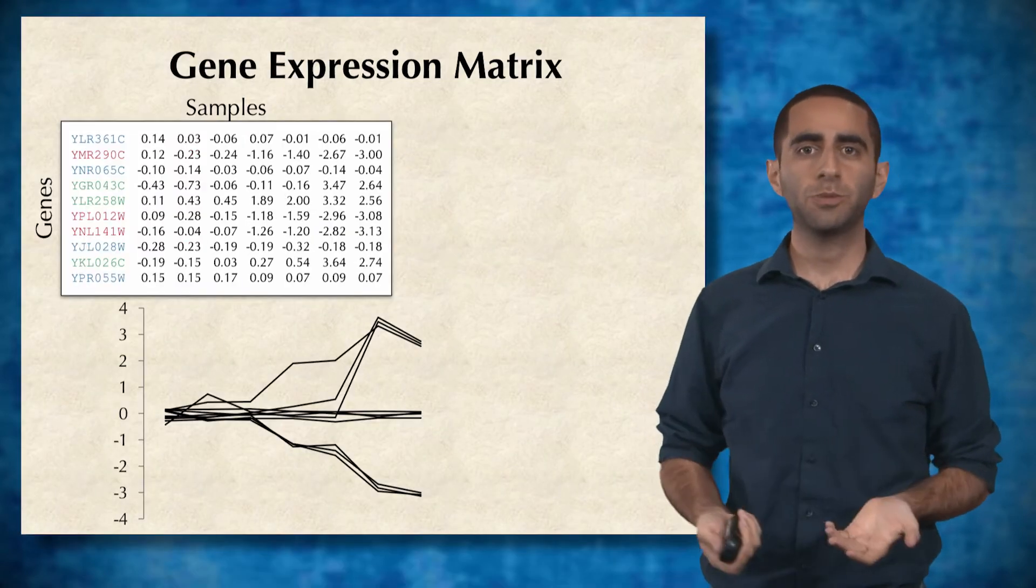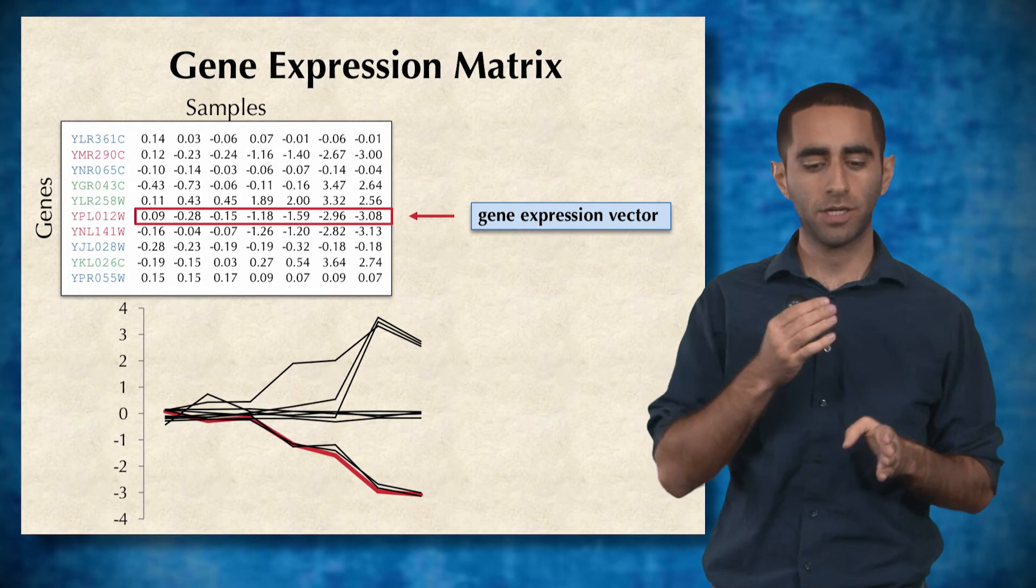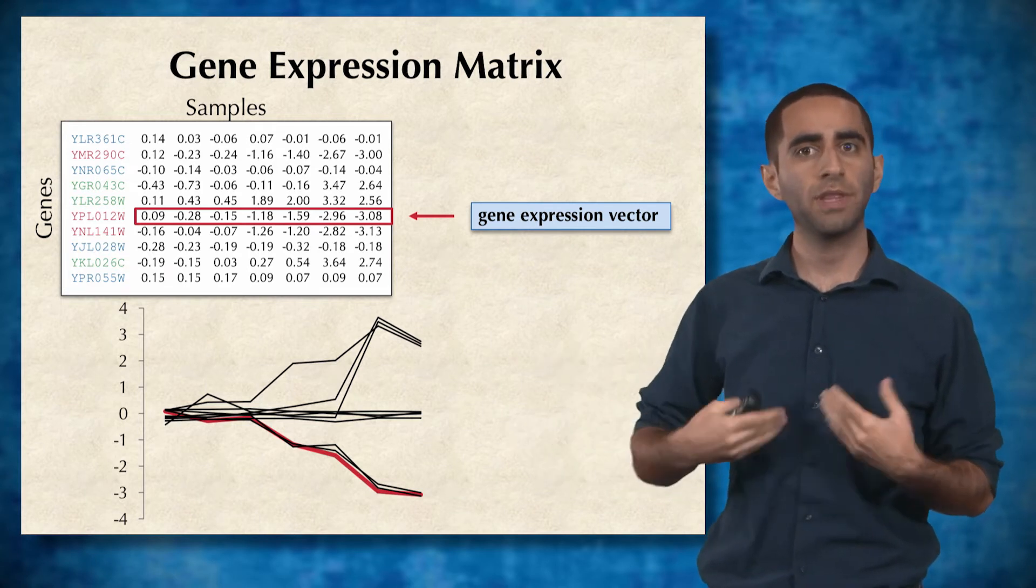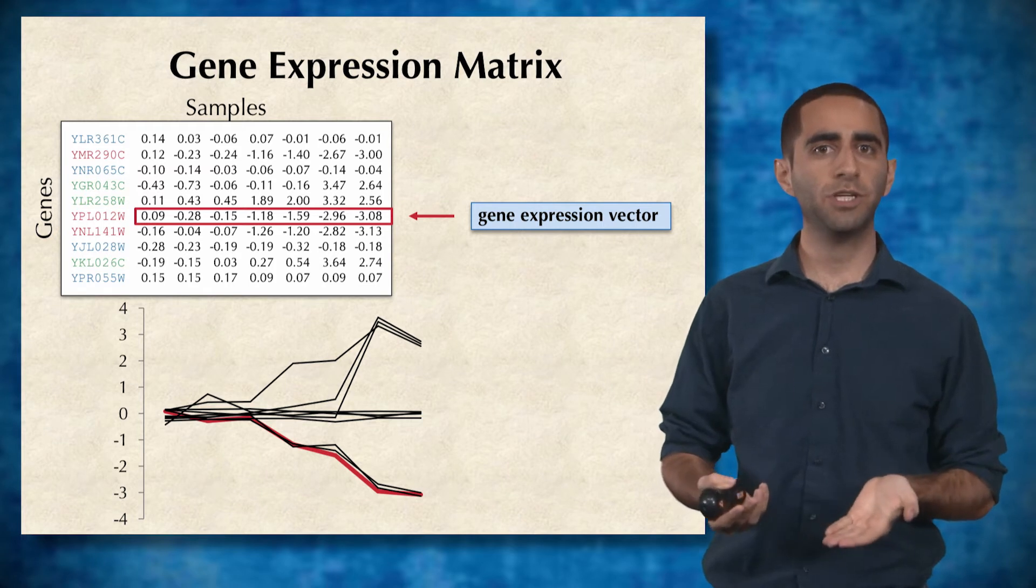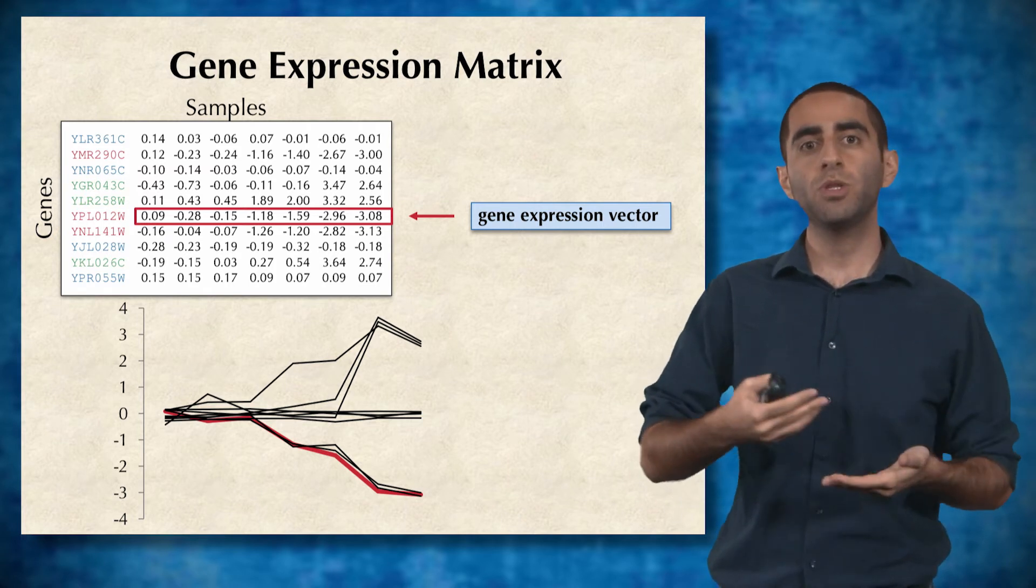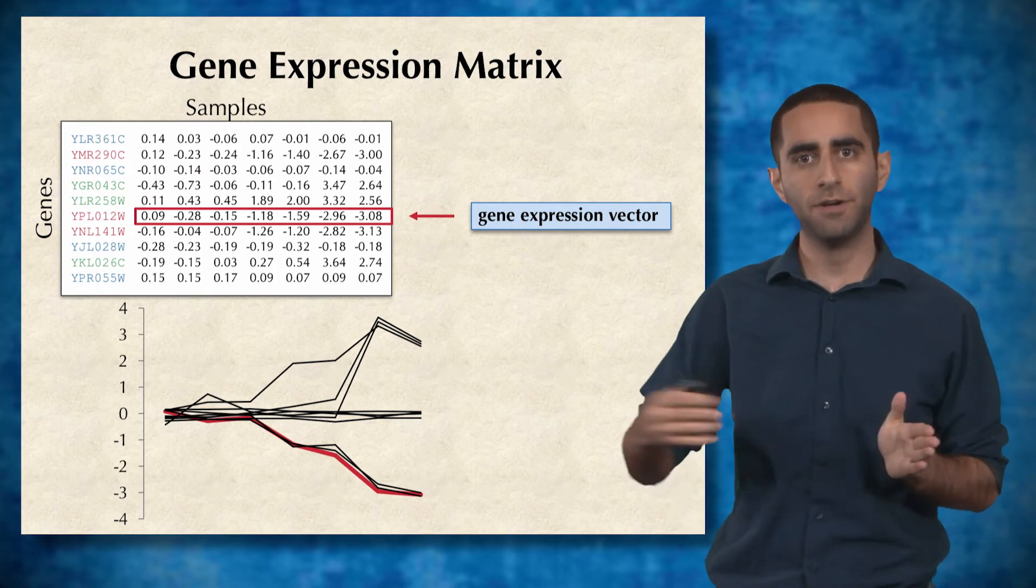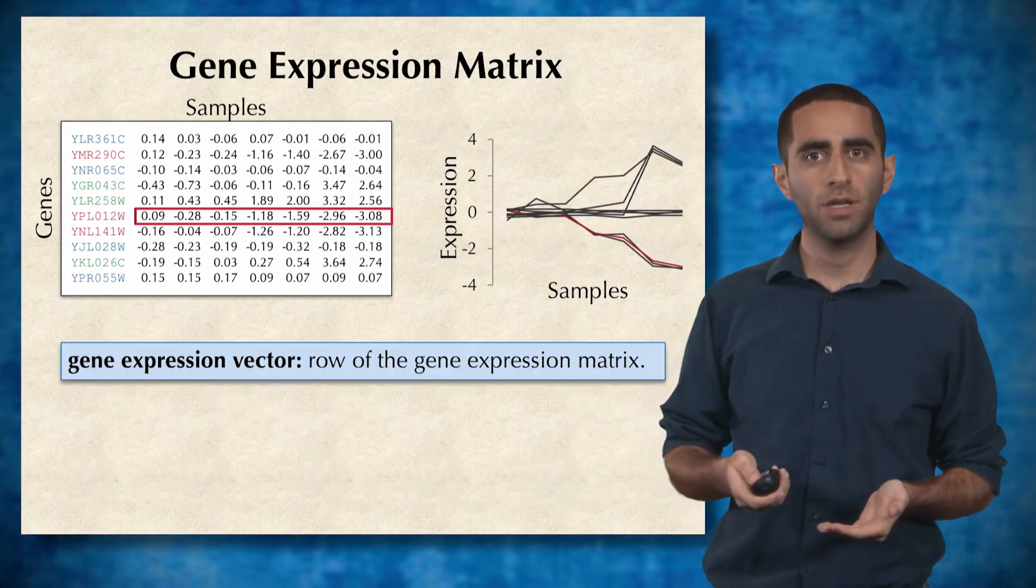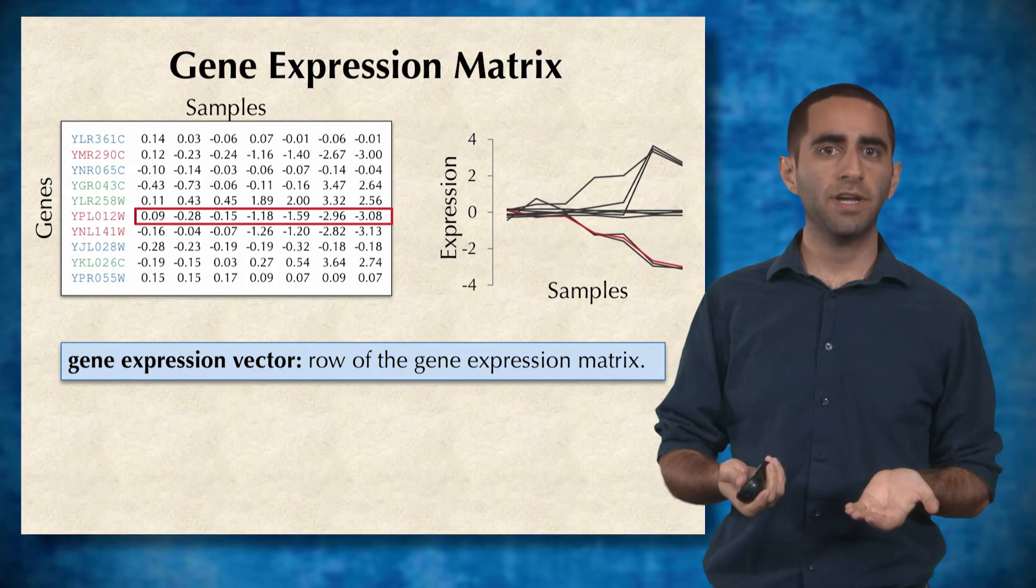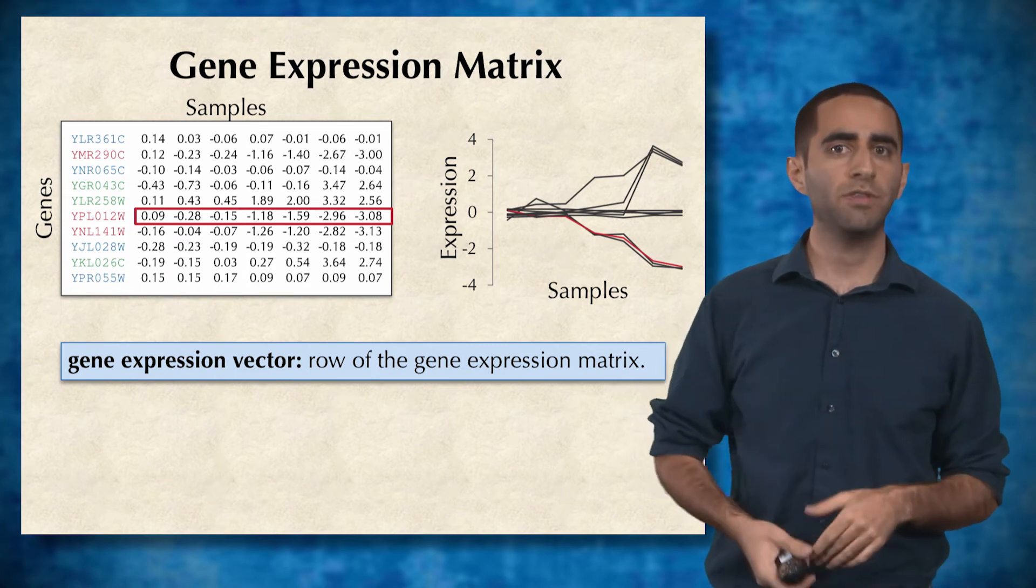Each row of a gene expression matrix is the collection of all gene expression values for that gene across all experiments. We can then plot the gene expression vector and show the trajectory of the expression of this gene as a function of whatever characteristic we're studying. This gene expression vector is just one row of the gene expression matrix.